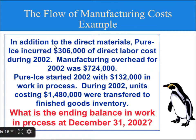Let's see the following example to understand more. In addition to Direct Material, Pure Ice incurred $306,000 of Direct Labour Cost during 2002. Manufacturing Overhead for 2002 was $724,000. Pure Ice started 2002 with $132,000 in Work In Process. During 2002, units costing $1,480,000 were transferred to the Finished Goods Inventory. What is the ending balance in Work In Process at December 31, 2002?